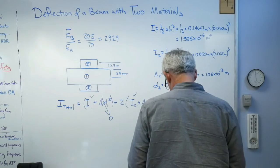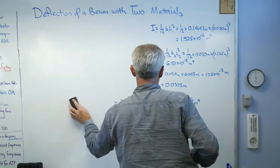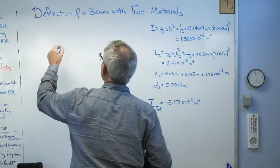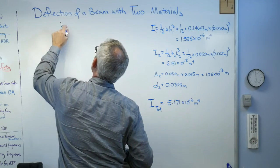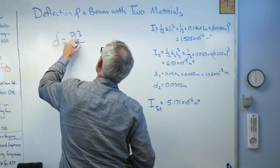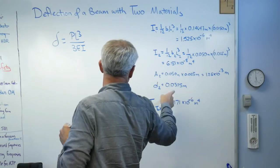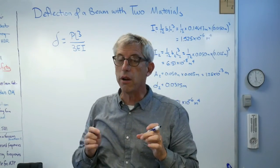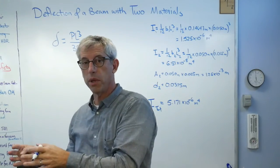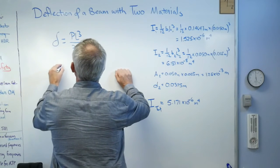So if you work all these numbers out, my displacement at the end is PL cubed over three EI. Now for E, I'm going to use aluminum. And for I, I'm going to use that. What I've done, the big idea here is I've transformed a problem I don't know how to solve into an equivalent problem I do know how to solve. When I say equivalent, it means they have the same answer.